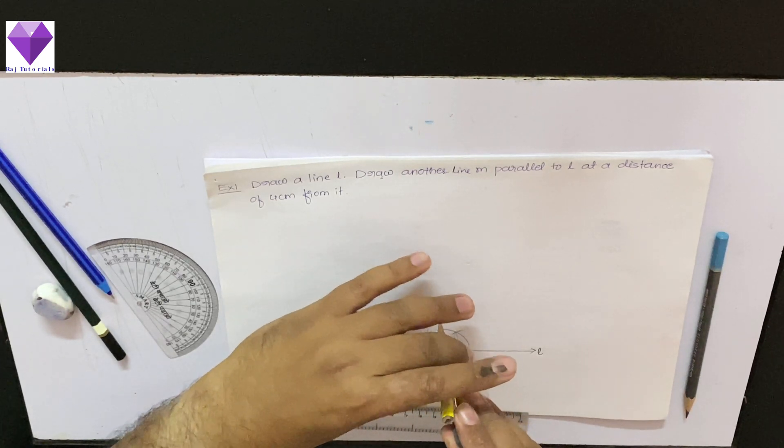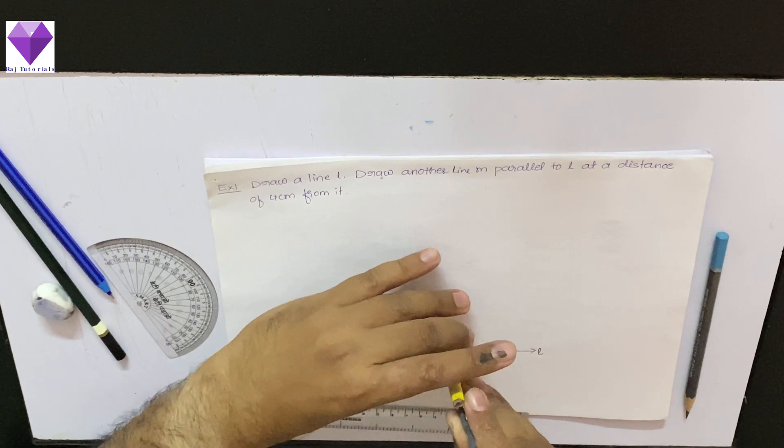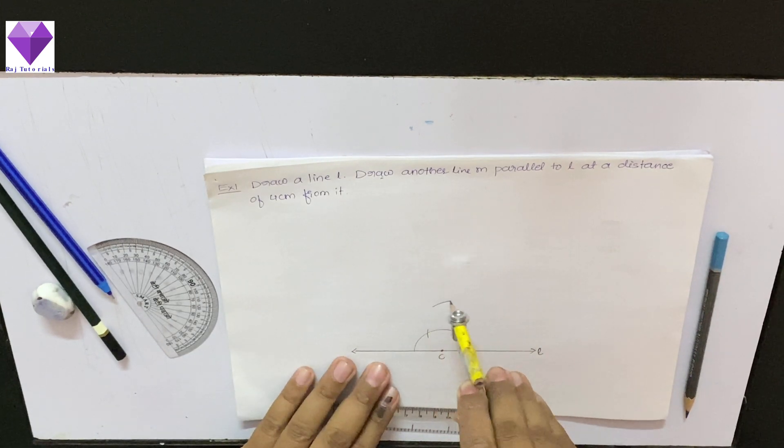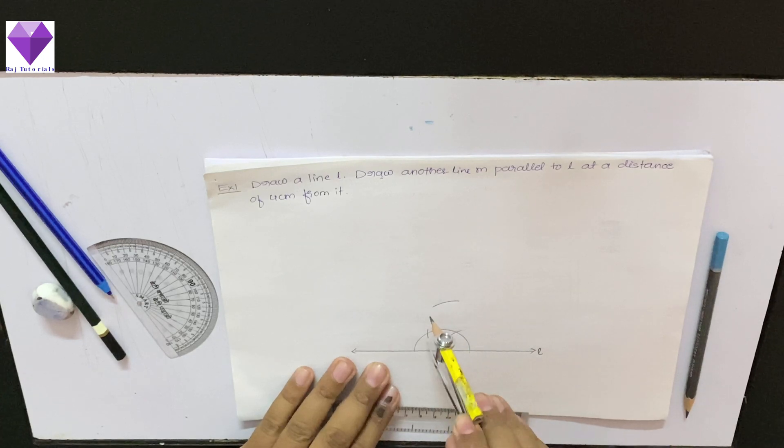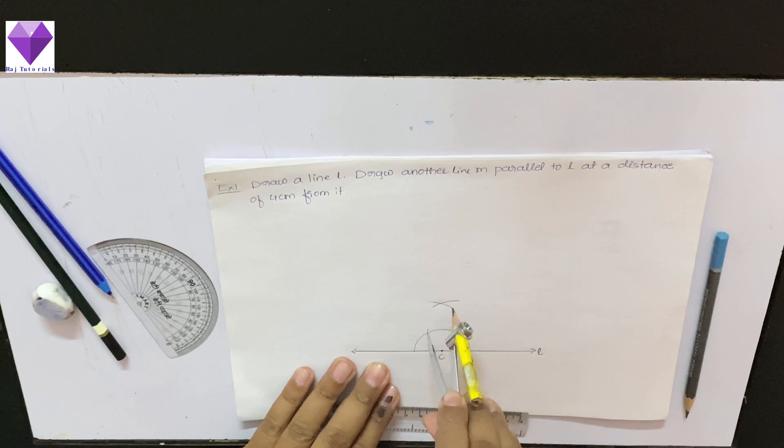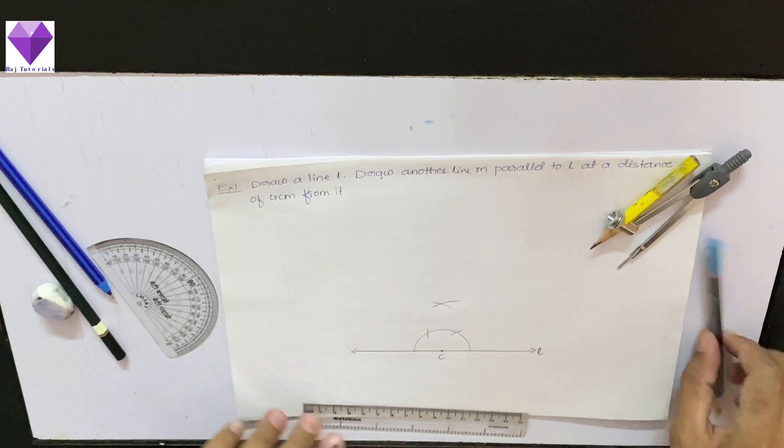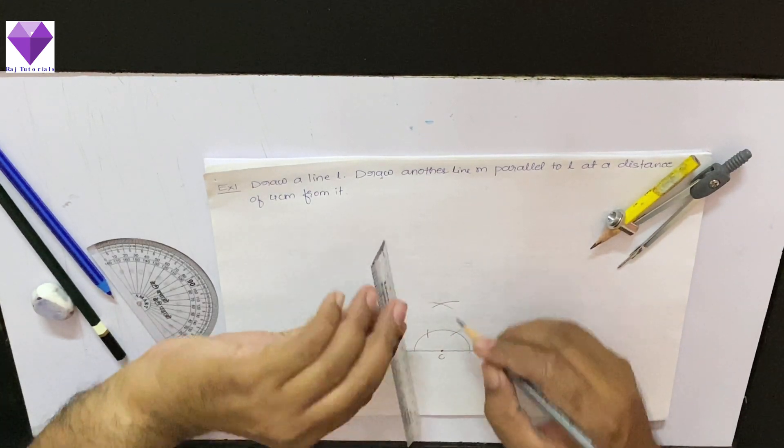Now from 60 degree I will draw any arc of any radius, and with 120 degree I will draw an arc which cuts this point. Now this point and C I will be joining. So this is nothing but my perpendicular line.